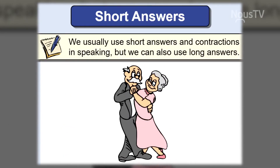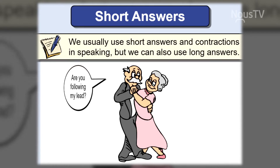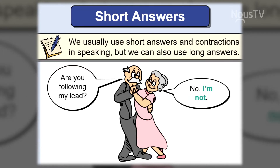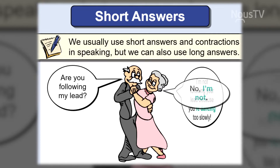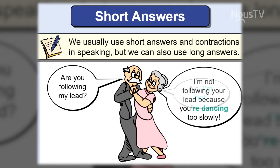Let's talk about some short answers now. We usually use short answers and contractions in speaking, but we can also use long answers. For example: Are you following my lead? No, I'm not. Or: No, I'm not following your lead because you're dancing too slowly.